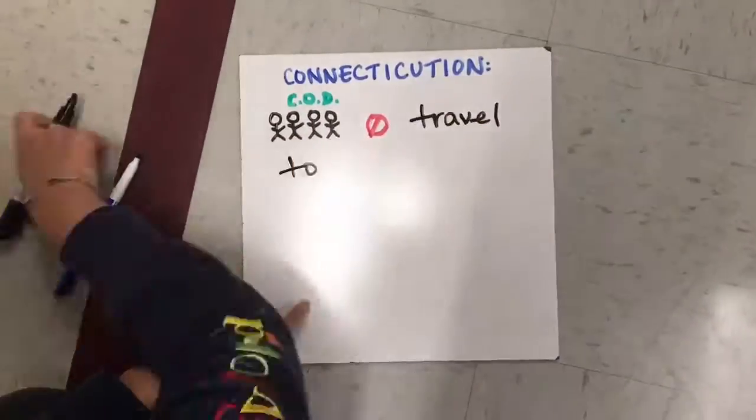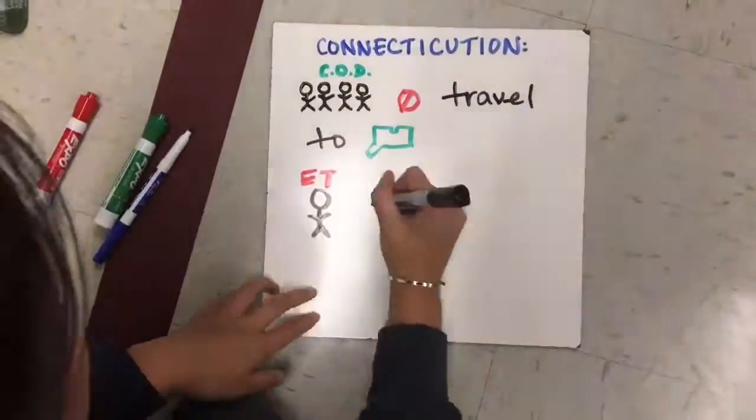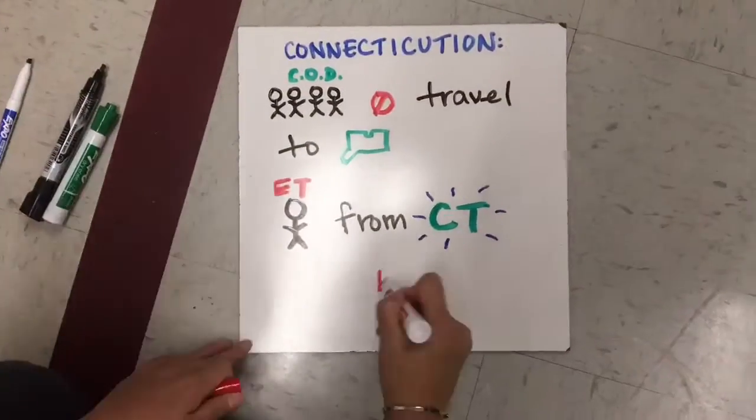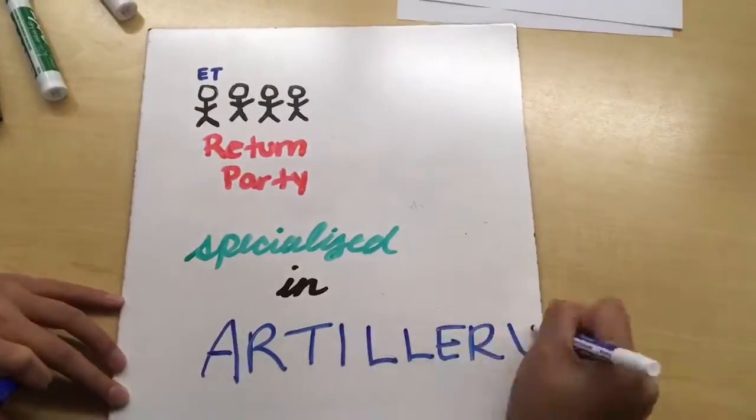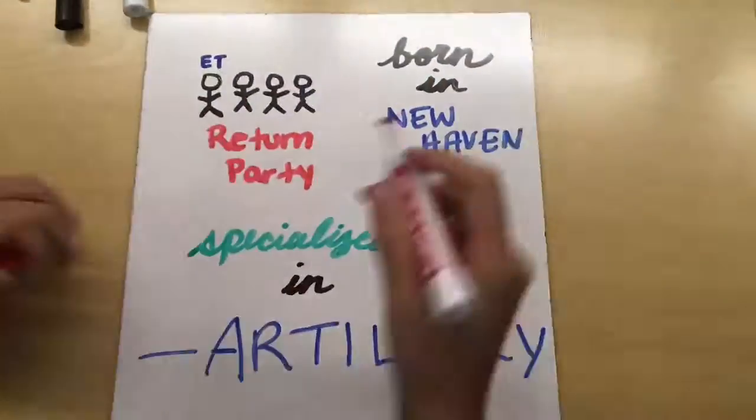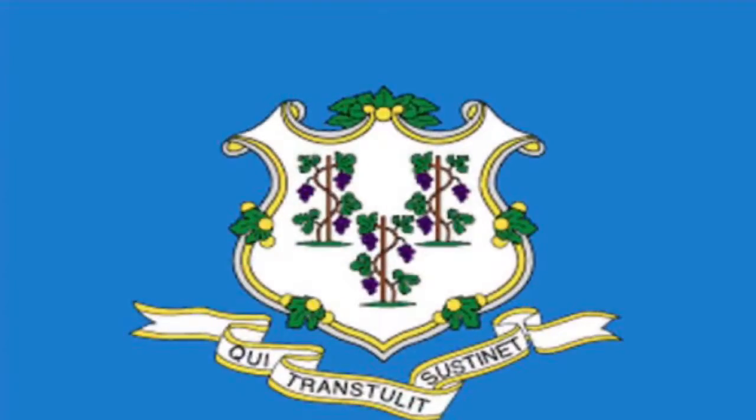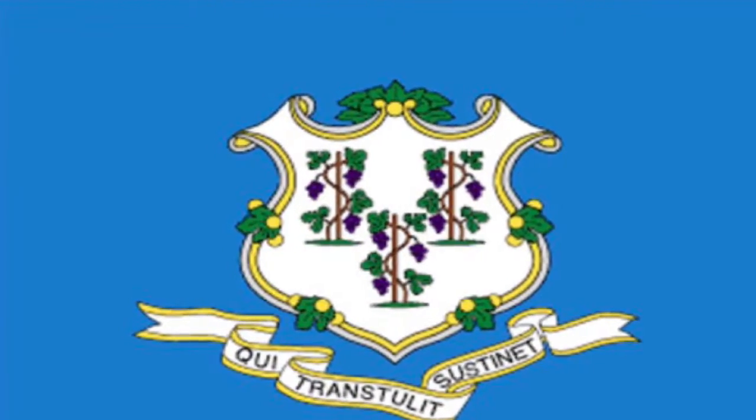Connecticut soon! Though the Corps of Discovery clearly did not travel to Connecticut in their expedition, a member of the Corps, Private Ebenezer Tuttle, came from Connecticut. He was part of the return party on the expedition, so when they met the Sioux and traded, he went back with some of the Sioux to get them to talk to Jefferson and to show the traded items. On the journey, his specialty was in artillery. He was born in New Haven, Connecticut.